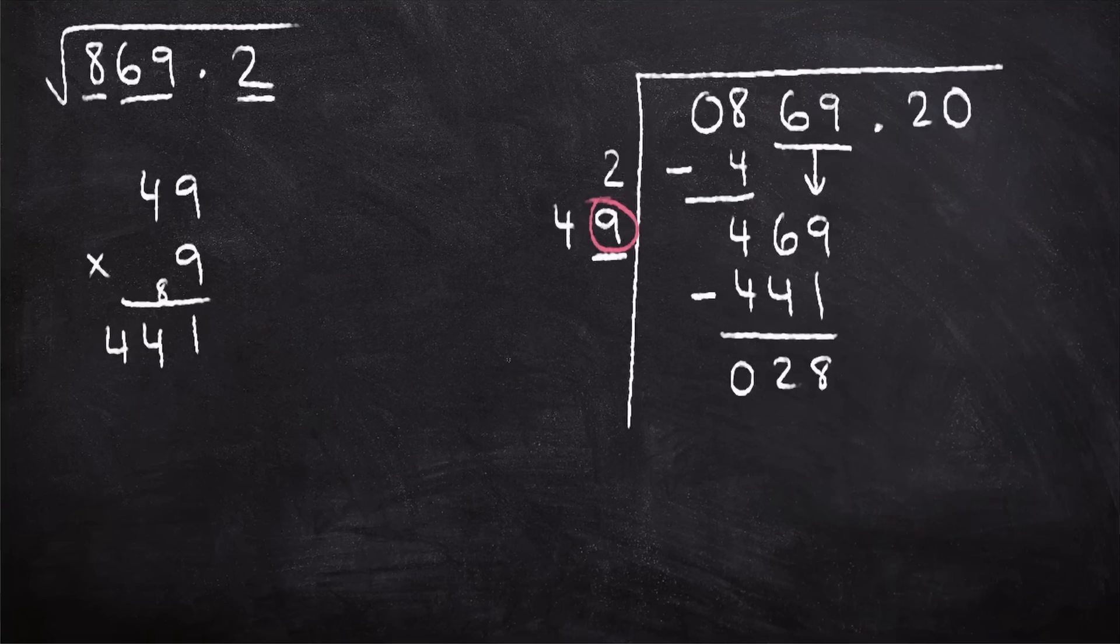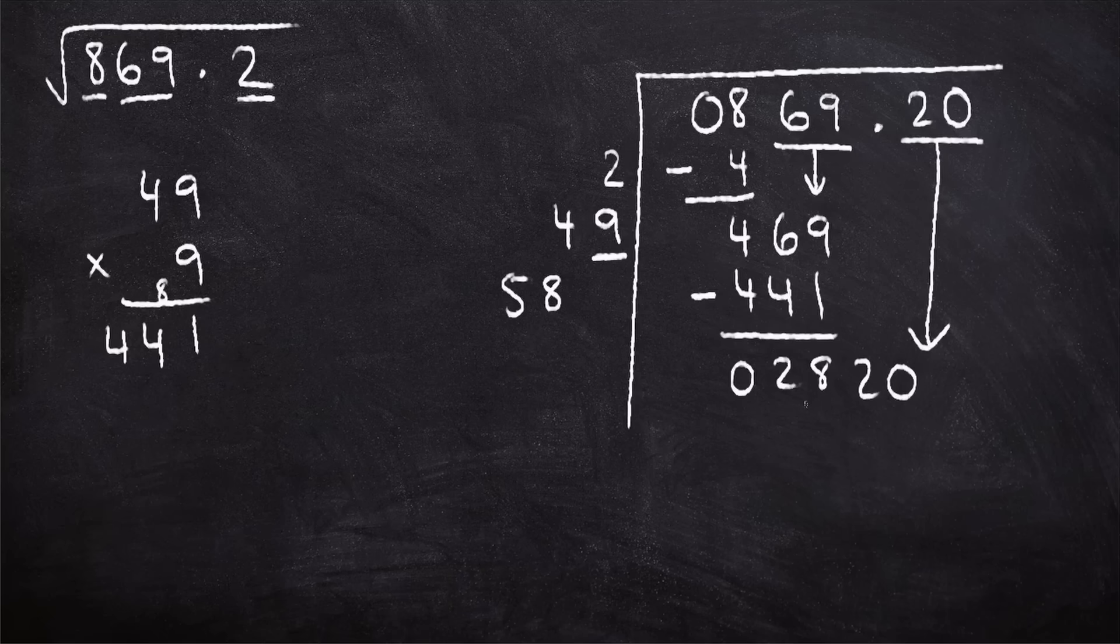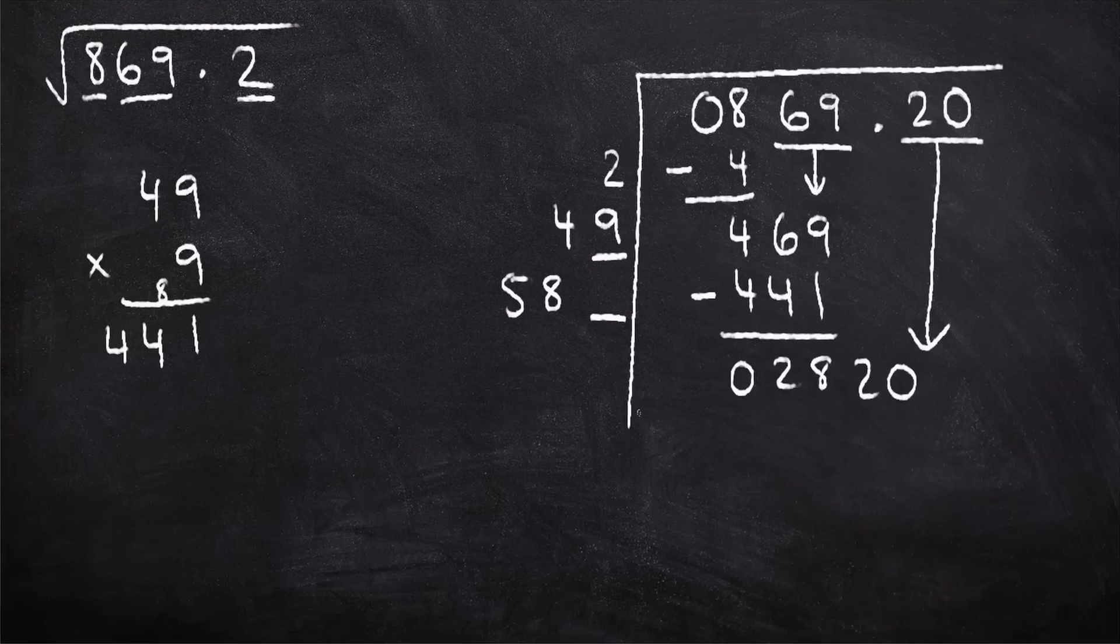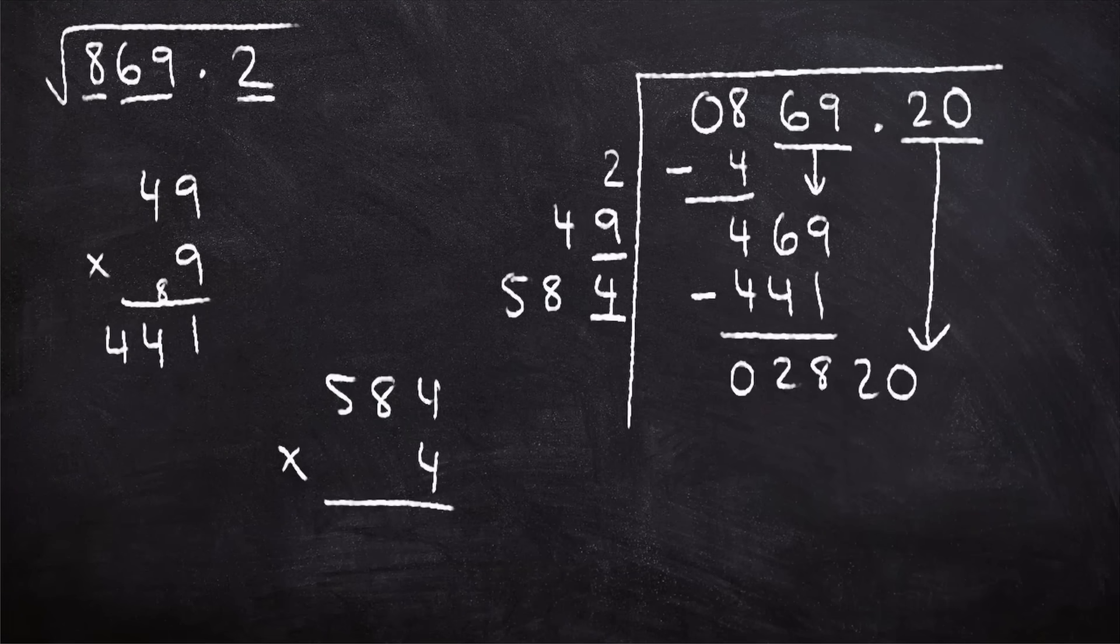Now we're going to take this 9 and add it to the 49, and we end up with 58 here. We're going to drop this next pair down to the bottom, so we get 2820. And we're going to do the same thing again. What digit can go in here that multiplies by the whole number that gives us a number that is just under 2820? And the answer is 4. So we do 584 times by 4, and we end up with 2336.